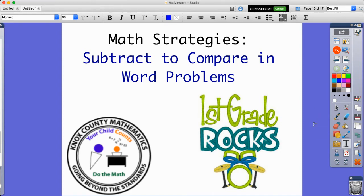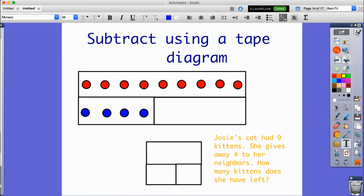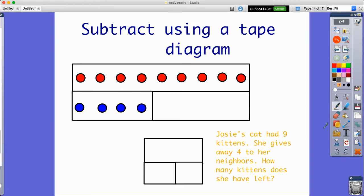Today's Math Strategy video is Subtract to Compare in Word Problems. Let's look at our first example. This says, Josie's cat has had nine kittens. She gives away four to her neighbors. How many kittens does she have left?